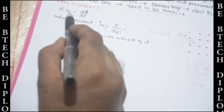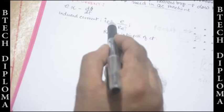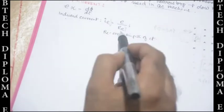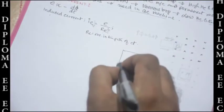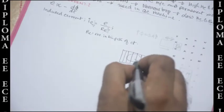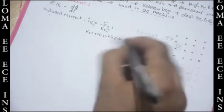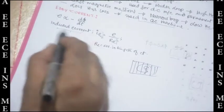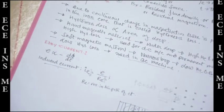Eddy current: E is proportional to −dφ/dt. Induced current I_E = E / R_E. If resistance increases, current decreases. To reduce eddy currents, we laminate the core to increase the resistance in the path of circulating currents, thereby reducing the eddy current loss.